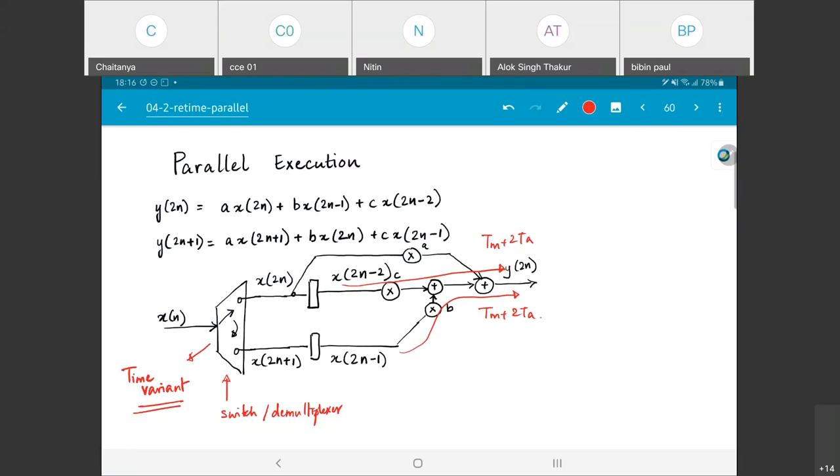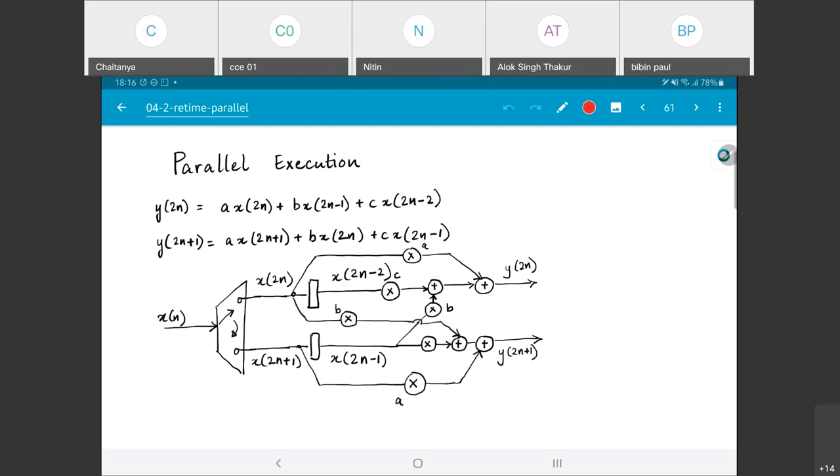But as far as we are concerned, the important point is I can implement the filter this way. I have now drawn the rest of the thing, the lower branch as well, the part that is required for getting y of 2n plus 1. I have got y of 2n, I have got y of 2n plus 1, I combine them by putting a multiplexer.